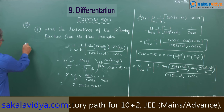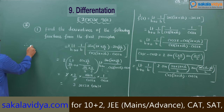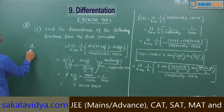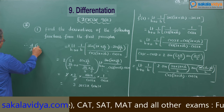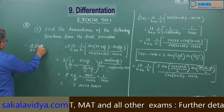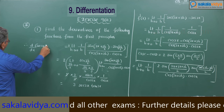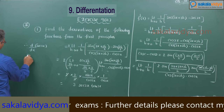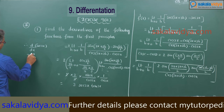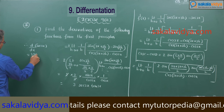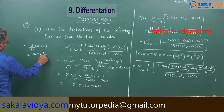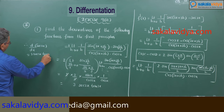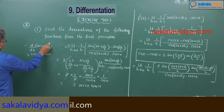Therefore, the derivative of secant 3x is equal to 3 sec(3x) tan(3x).